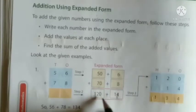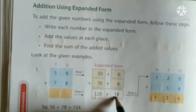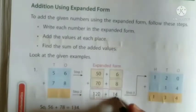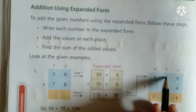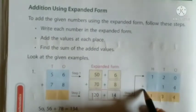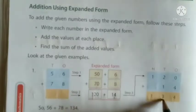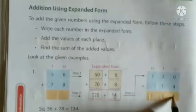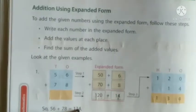Now step 2: add the values at each place. So 6 plus 8 equals 14. Then 50 plus 70: 0 plus 0 is 0, and 5 plus 7 is 12, so 120. That gives us 120 plus 14. Step 3: find the sum of the added values. 120 plus 14 — ones place: 0 plus 4 is 4; tens place: 2 plus 1 is 3; hundreds place: 1 remains. So 56 plus 78 is equal to 134.